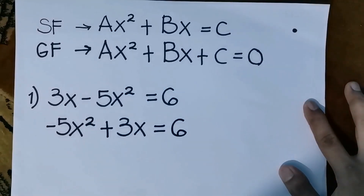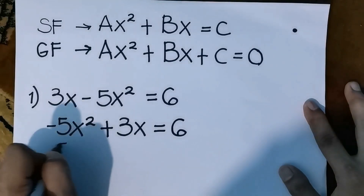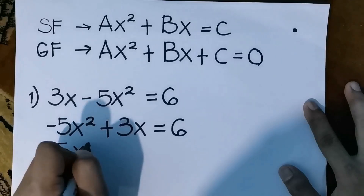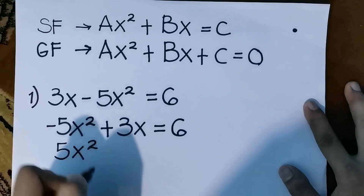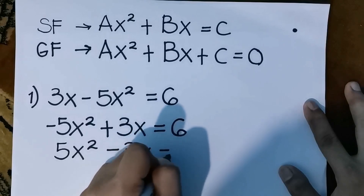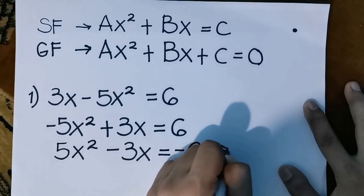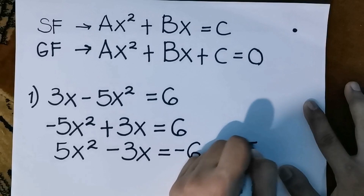Since the leading term is negative, we need to change all the signs — that is, multiply it by negative 1. So changing all the signs, it will become 5x squared minus 3x equals to negative 6. This will be the standard form.